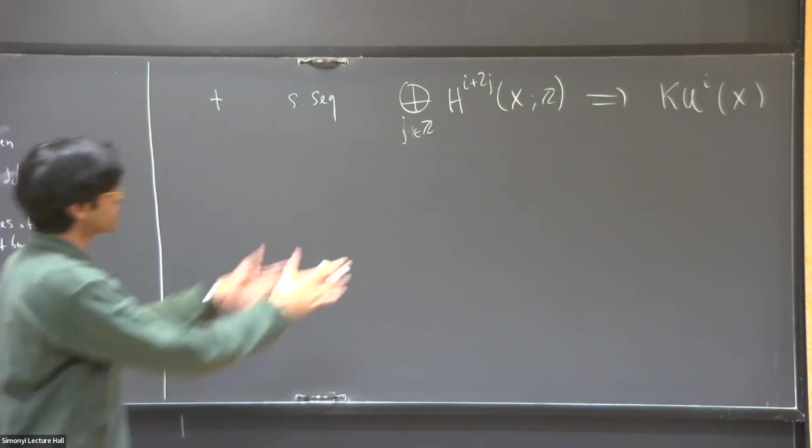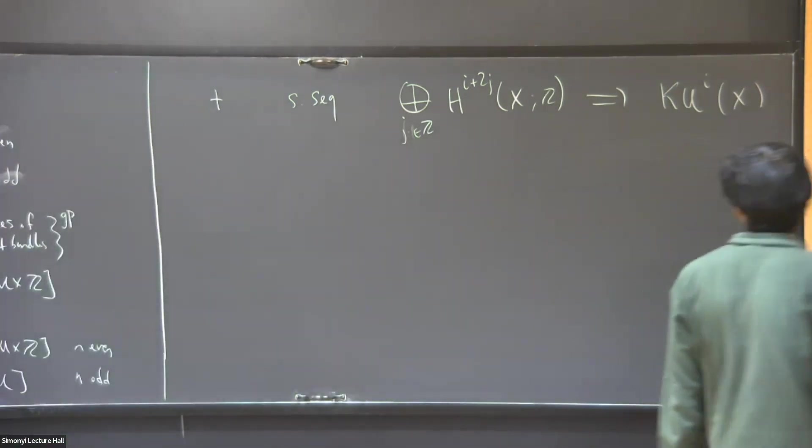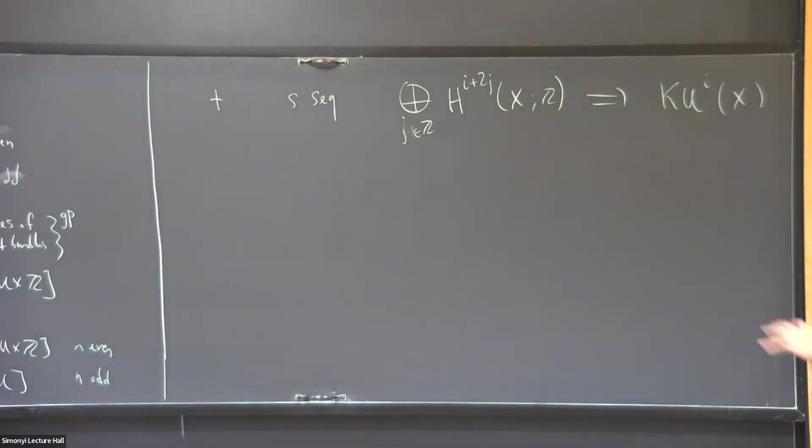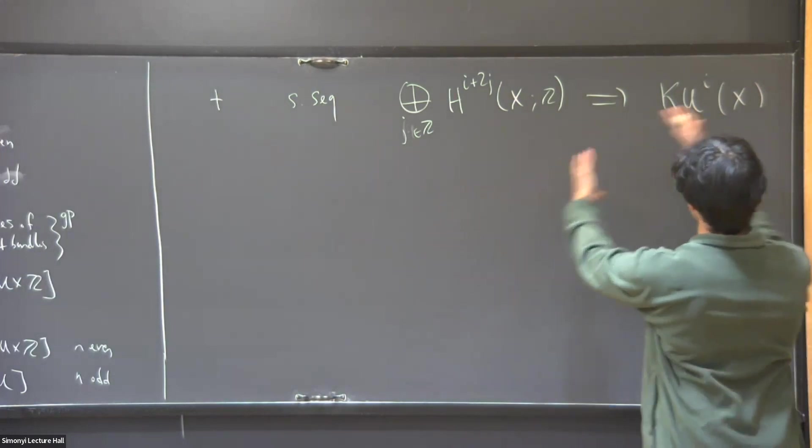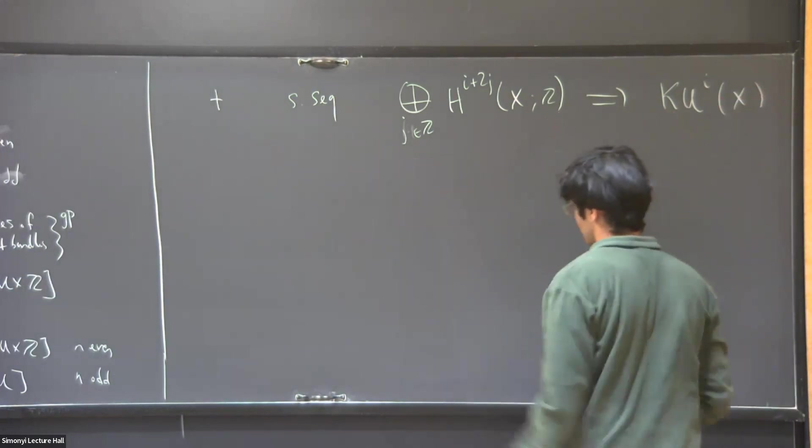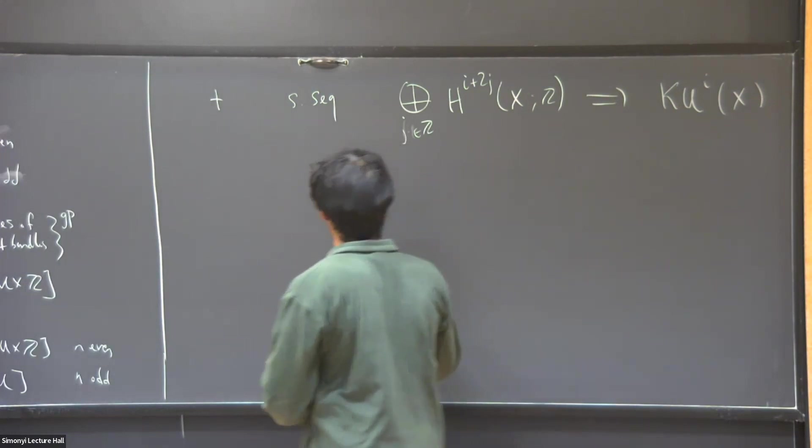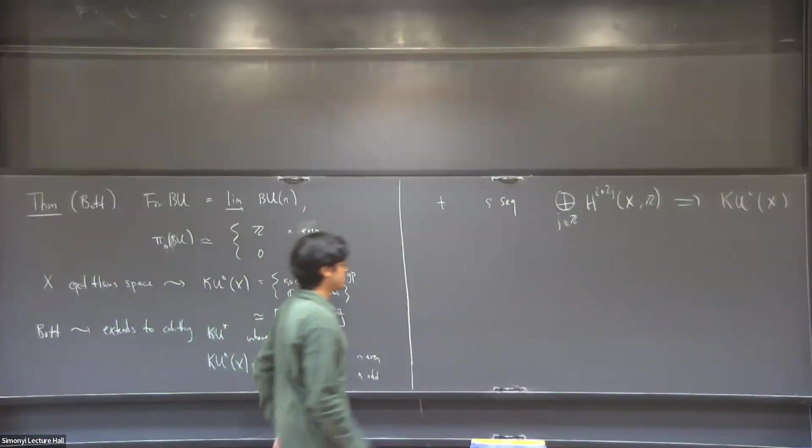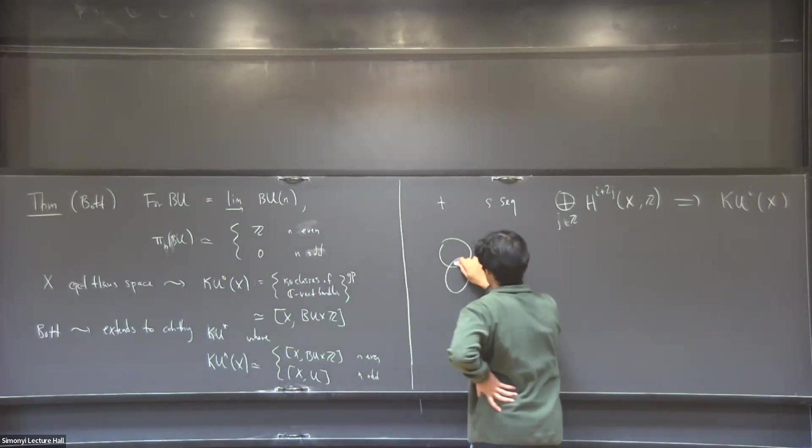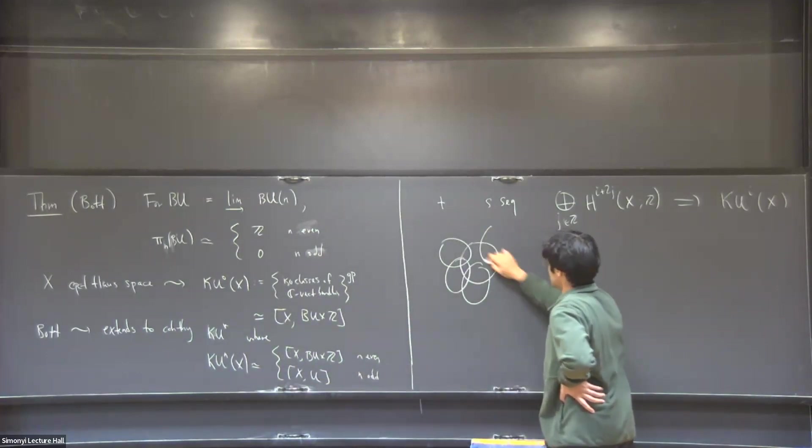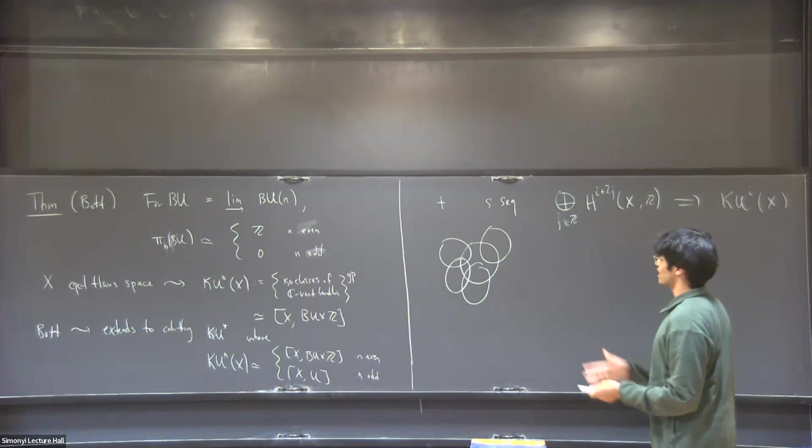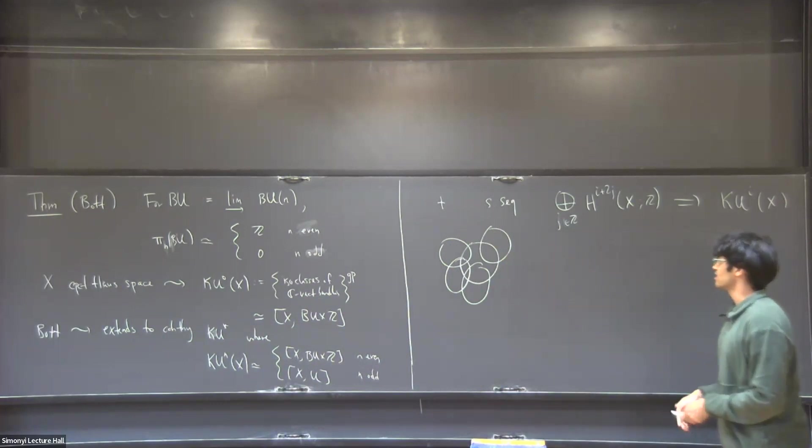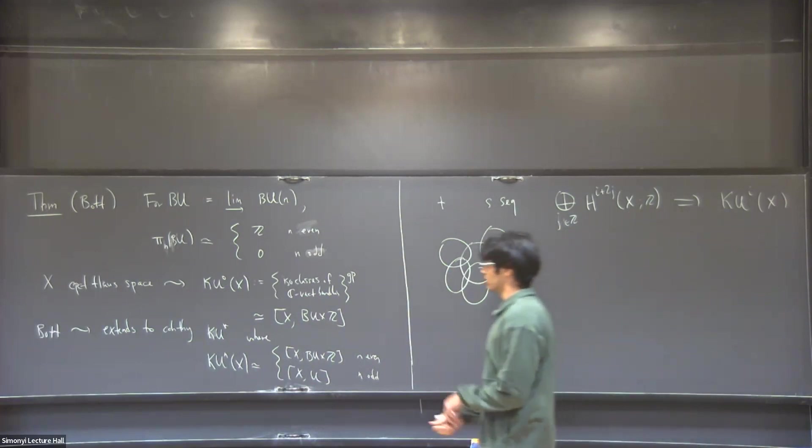And the basic idea, if you're not friends with spectral sequences, then you're not alone. You can just think of this as some tool for computing this side from this side. And maybe one way to think about how it comes about is, if you think about X being something like a manifold, then it's covered locally by contractible spaces. And Bott's theorem is telling you what K-theory looks like on all those contractible spaces. And this is some kind of local to global tool for computing K-theory of the whole thing.